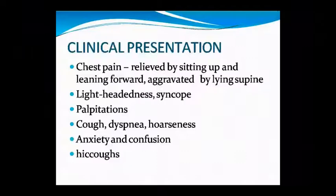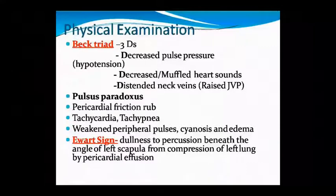Clinical presentation of pericardial effusion includes chest pain, shortness of breath, anxiety, confusion, and hiccups. On examination, Beck's Triad — the 3 Ds — will show decreased pulse pressure, decreased heart sounds (muffled), and distended neck veins. Other findings include hypotension, tachycardia, and tachypnea.